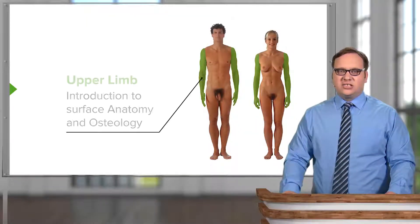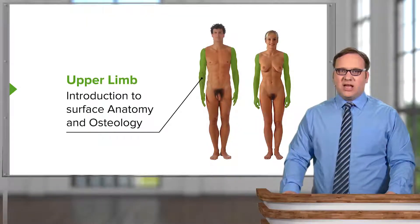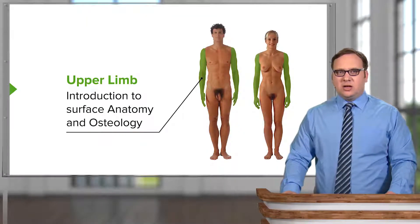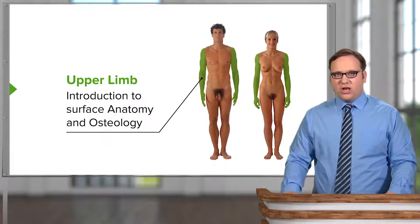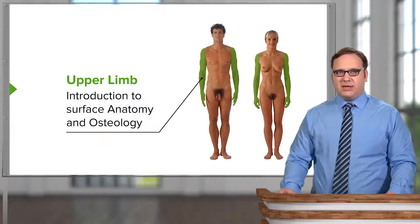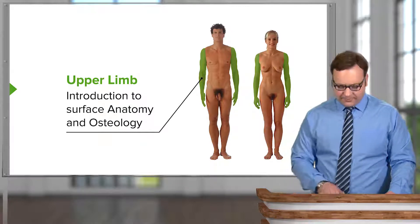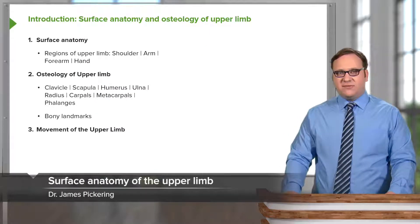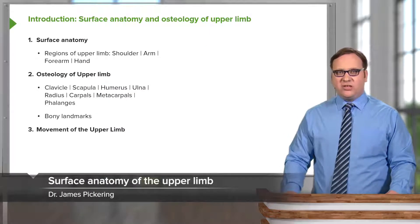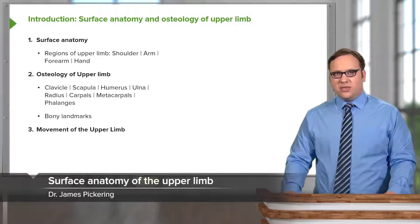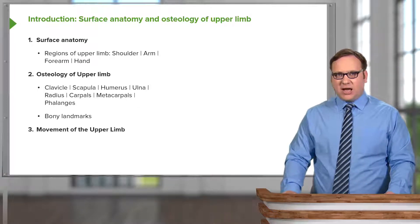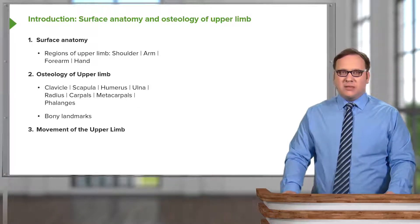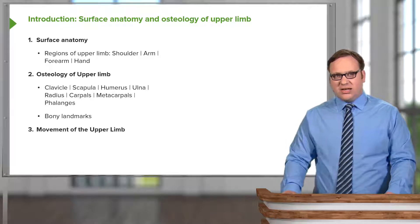In this lecture, the first in a series about the upper limb, we're going to look at the surface anatomy and osteology of the entire upper limb. We're going to look at the surface anatomy of the shoulder, the arm, the forearm, and the hand — all of these regions making up the upper limb. And then we're going to move on to the osteology.